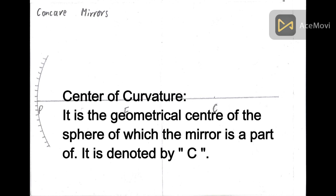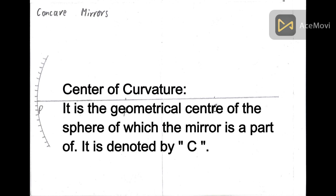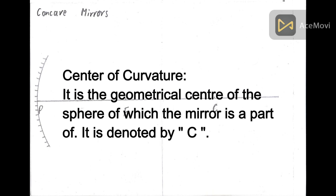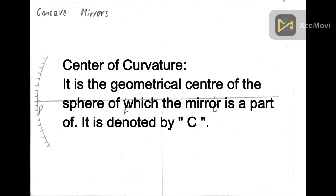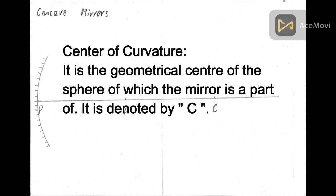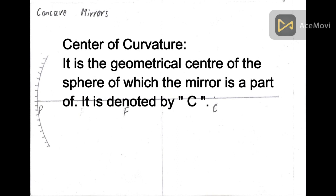Center of curvature - it is the geometrical center of the sphere of which the mirror is a part of, or it is the point of concurrence of all the normals in the sphere of which the mirror is a part of. It is denoted by C.